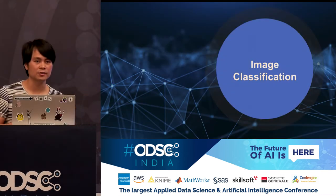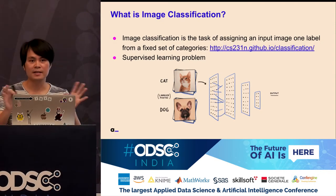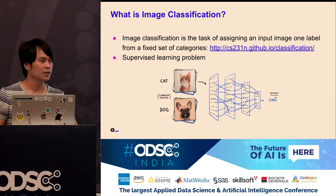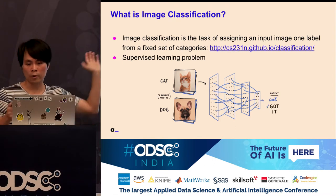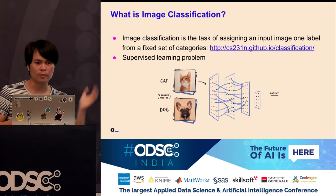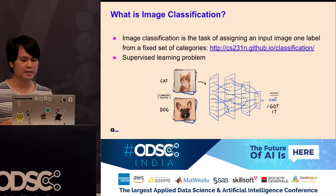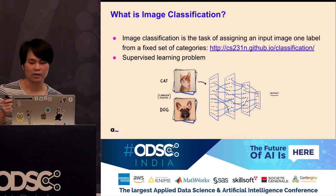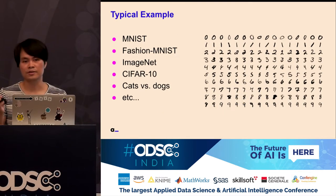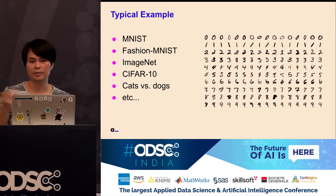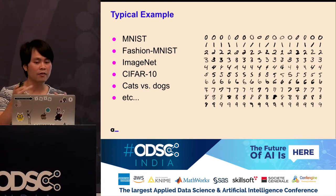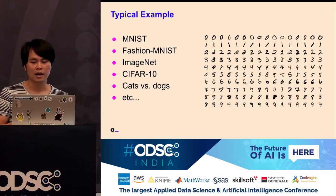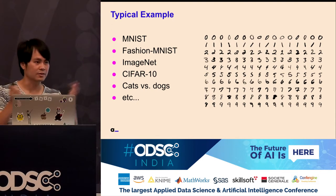A short introduction to image classification so everyone is on board. Image classification is a very simple task — you assign an input image a label from a fixed set of categories. It's a supervised learning problem. There are many examples you can find on the internet: MNIST for digit recognition from 0 to 9, Fashion MNIST from Zalando, ImageNet, CIFAR-10, and of course Cats vs Dogs. There are many tagging examples.